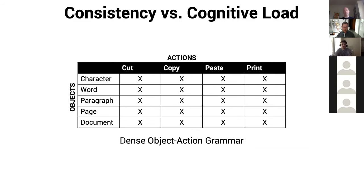You end up with a very sparse grammar when you try to map the number of objects and number of actions — and sparse is bad. In a perfect world, everything would be symmetrical, regular, and consistent. So we could have objects like paragraphs, pages, and documents, and we would have what most of you take for granted — because most of you are probably digital natives — actions that are generally predictable and consistent, like cut, copy, paste, and print. This would be a perfectly dense grammar.